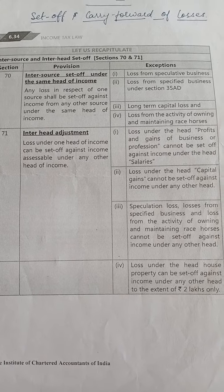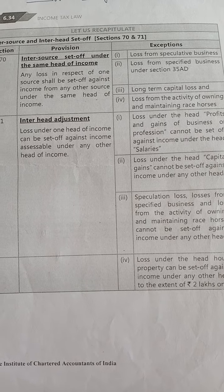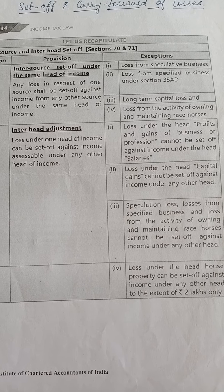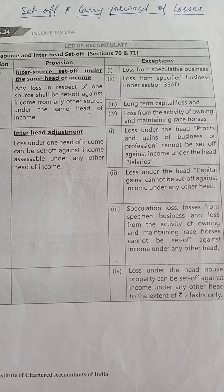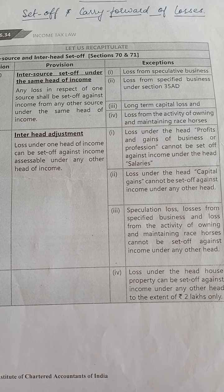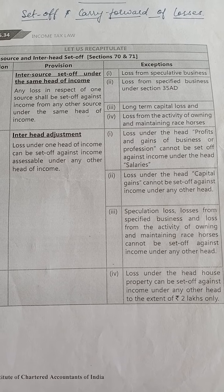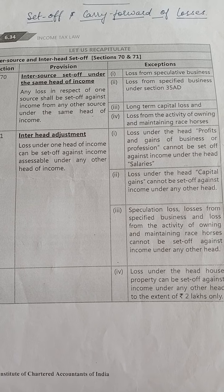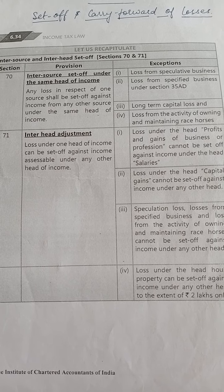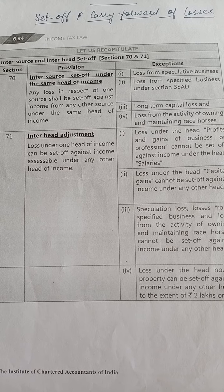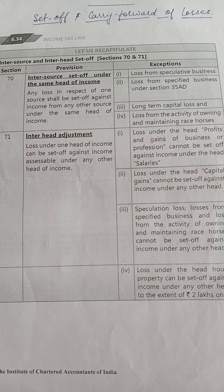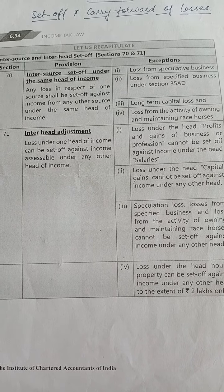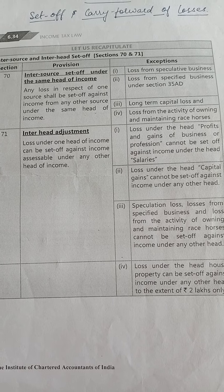If there is some loss in a particular head of income, that can be set off against the same head if the income is from any source. For example, suppose there is a non-speculative business income — if there is income from a wheat business and a loss from a cloth business, that loss can be set off against the wheat business income.